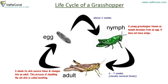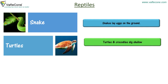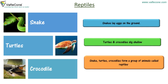Reptiles: snakes lay eggs on the ground. Turtles and crocodiles dig shallow holes to lay their eggs. Reptiles form a group of animals that reproduce by laying eggs.